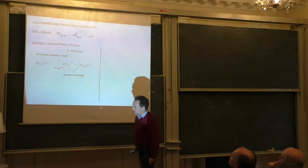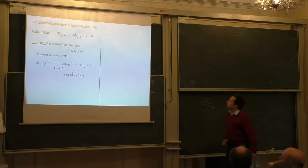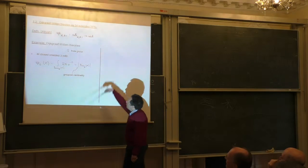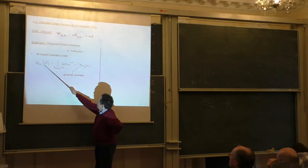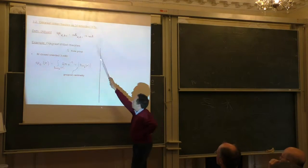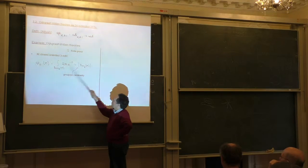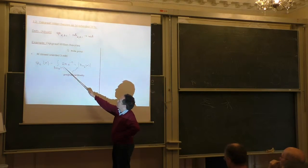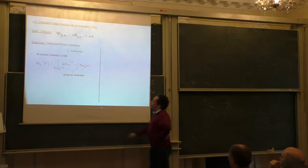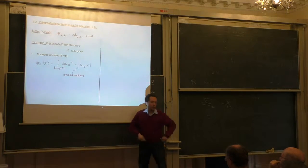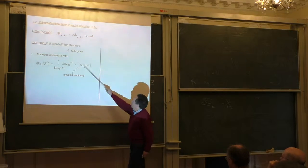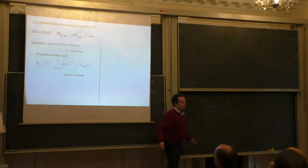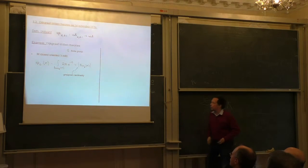To have a concrete check, I'm using a specific class of models: Dijkgraaf-Witten theories. Let's start by taking a closed oriented three-manifold and a finite group G. Defining an invariant of a three-manifold is easy. Take the space of field configurations — all G principal bundles on M, that's a finite groupoid — and take the action to be simply zero. For a topological field theory, I count the groupoid using groupoid cardinality: take the sum over all isoclasses of objects and weight them by the inverse of the automorphism group order.